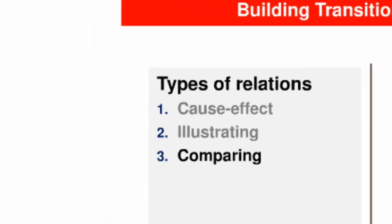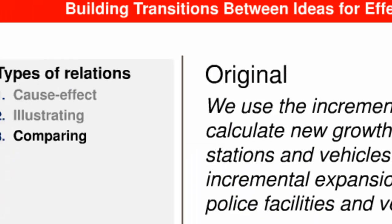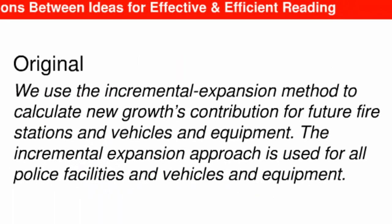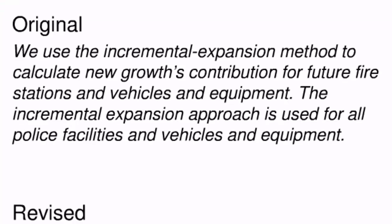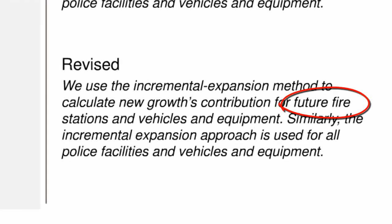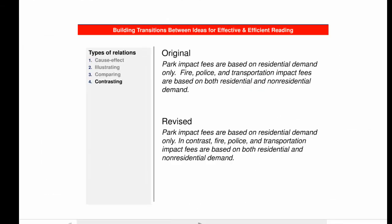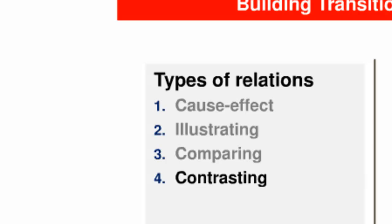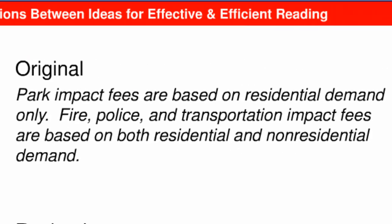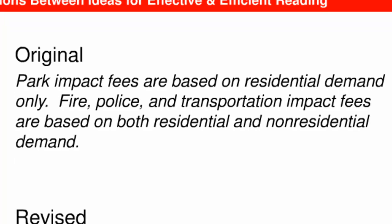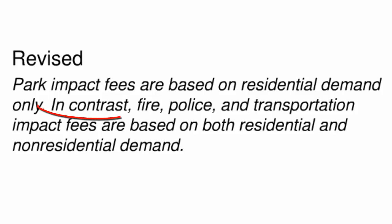The third type of relation is comparing. Look at yet another passage from the executive summary. The second sentence is supposed to provide similar information, which would be clearer with a transition like "similarly." The fourth type of relation is contrasting. In this case, the second sentence provides dissimilar information to the first, so a transition like "in contrast" would make that clear.